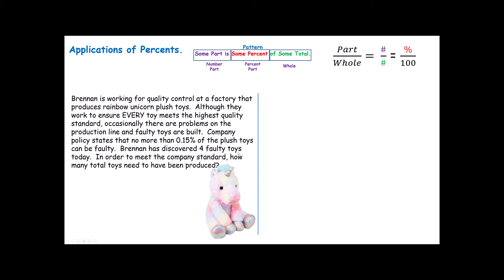Brennan has discovered four faulty toys today. In order to meet the company standard, how many total toys need to have been produced? So, we read through here and we're looking for important pieces of information. Here's what I find. 0.15% of the plush toys can be faulty. This is very important because this tells me that we're finding a percent of the toys. That means the toys must be my total. Brennan has discovered four faulty toys. Remember, the faulty toys can only be .15%. And notice that we're looking for the total number of toys. So, when I go to set up, my some part is some percent of some total.